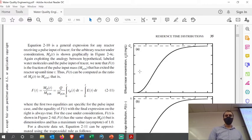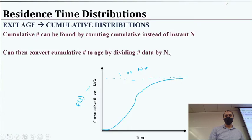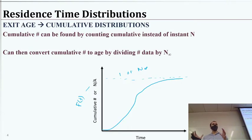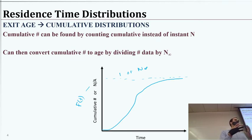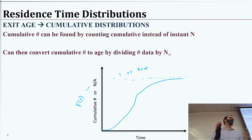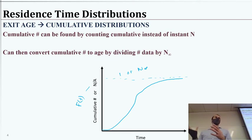Mostly what I'm interested in you knowing is how these essentially work together, so that if you did have to design a system like this, you understand the concept and know there are ways to calculate the things you need from a residence time distribution. By the end of today's lecture, hopefully you get a decent idea of what it looks like when a reactor is performing poorly and what the residence time distribution implies about the reactor itself.